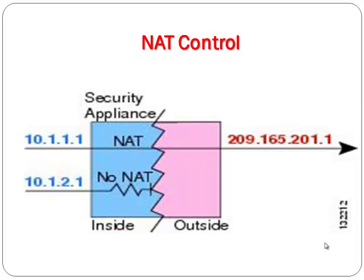NAT Control requires that packets traversing from an inside interface to an outside interface match a NAT rule. For any host on the inside network to access a host on the outside network, you must configure NAT to translate the inside host address. Please note that NAT control is used for NAT configurations defined with earlier versions of the ASA. The best practice is to use access rules for access control instead of relying on the absence of a NAT rule to prevent traffic through the ASA. Interfaces at the same security level are not required to use NAT to communicate.